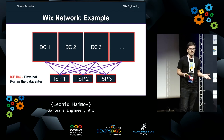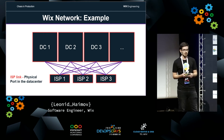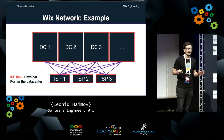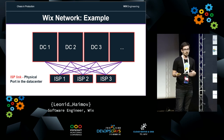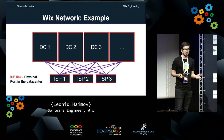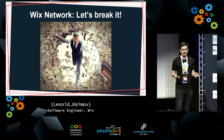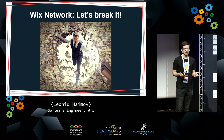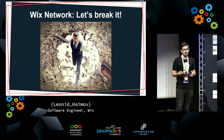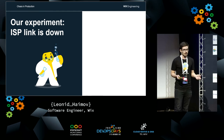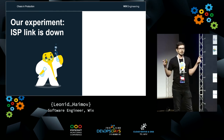Now that we've understood what a chaos experiment is, we can go through a real experiment that we've done in our system. Wix consists of a couple of data centers, each data center is connected to a couple of ISPs that provide connectivity. Every minute, across all data centers, many many gigabytes of data flow through. Imagine what happens when one of those ISPs suddenly goes out of service — and that's what we did.